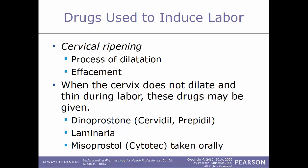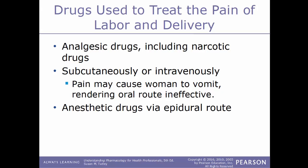Drugs used to treat the pain of labor and delivery include analgesic drugs, including narcotics, which can be given subcutaneously or intravenously. These routes are preferable because the pain of labor can cause a woman to vomit, making oral administration ineffective. Anesthetic drugs given via an epidural route may also be used.